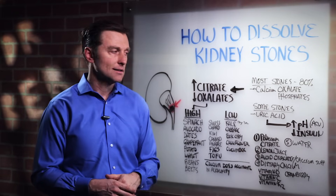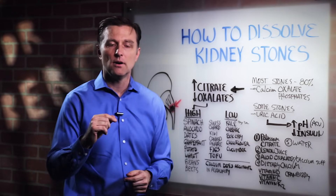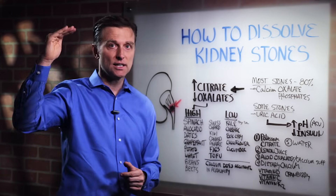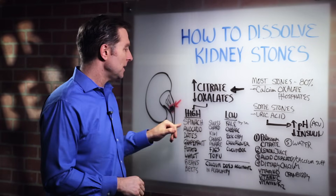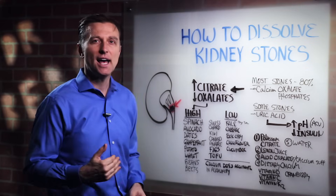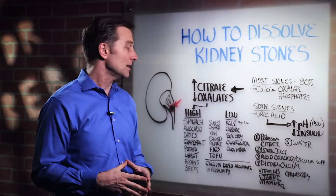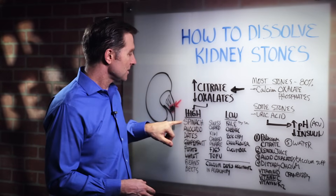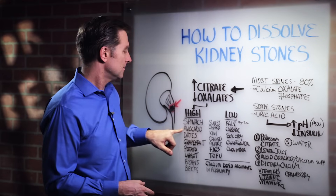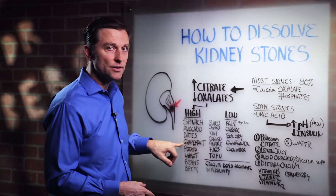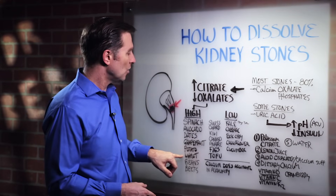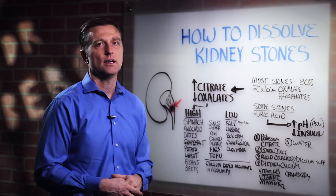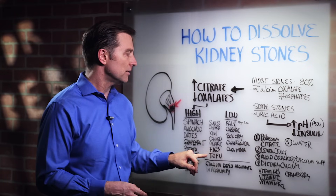Number two, you want to avoid oxalates. I've put a link below of all the different categories of foods — what has extremely high oxalates and what is very low. But spinach is at the top of the list; spinach has hundreds of milligrams of oxalates per ounce. Avocado is high. Dates are high. Grapefruit is high. Potato, wheat, beans, and beets are very high. Swiss chard is very high. Kiwi and canned pineapple are very high. Figs and tofu are very high in oxalates. Nuts unfortunately are very high — almonds are very, very high.